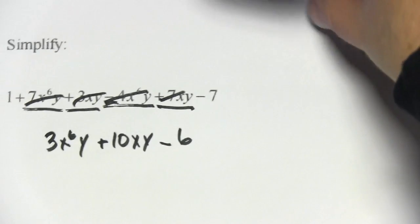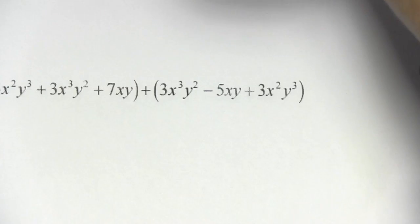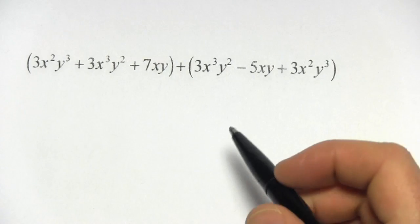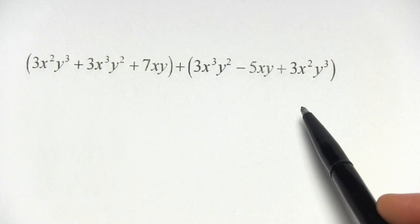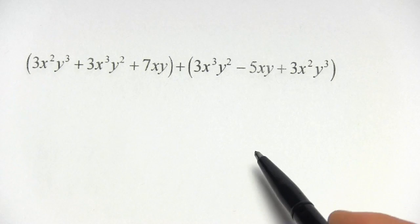Let's try another one. This one's just written slightly differently. We have two sets of parentheses, but there's a plus sign between them, so really we can just find the terms in each one that are the same and add them together.